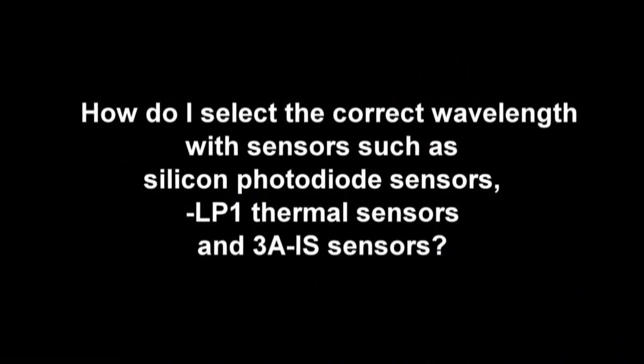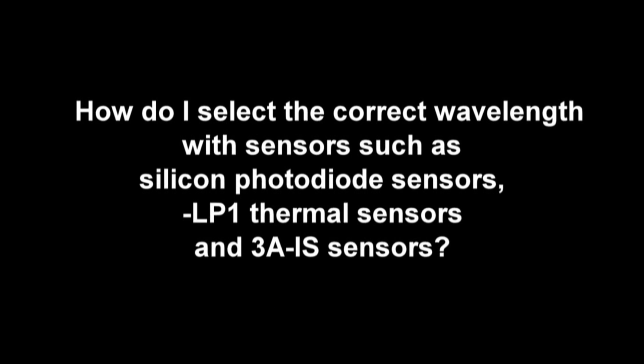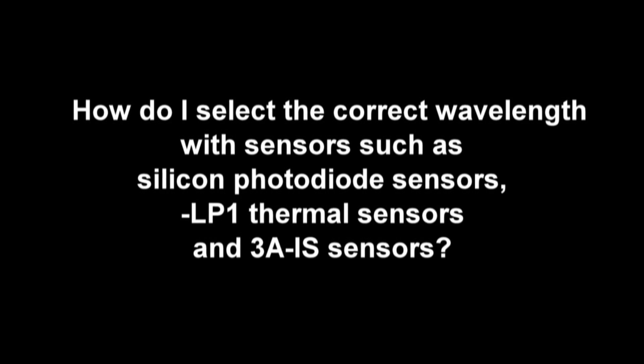We often get asked the following question: how do I select the correct wavelength with sensors such as silicon photodiode based sensors or certain types of thermal sensors? My meter only shows me six wavelengths and mine isn't one of them.